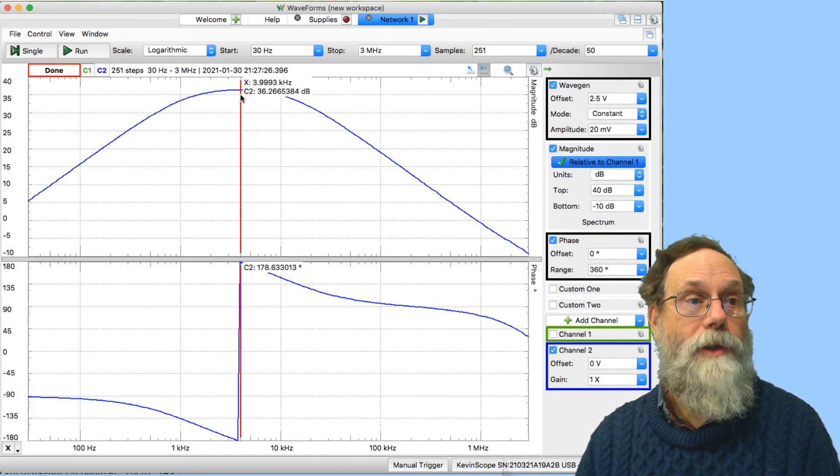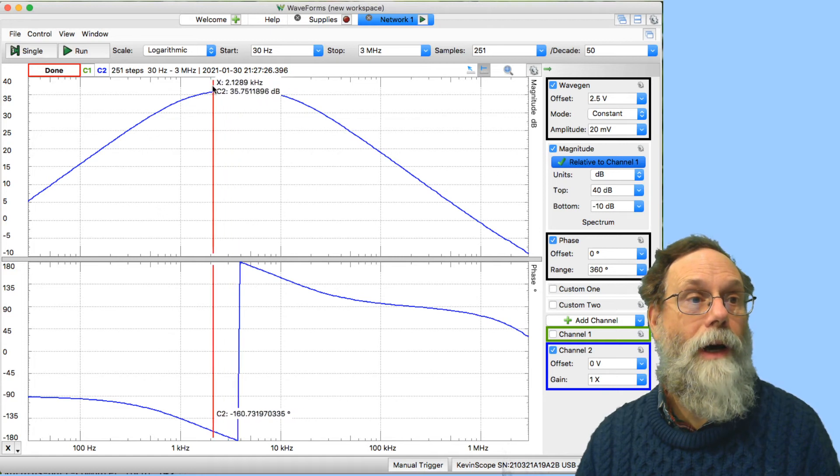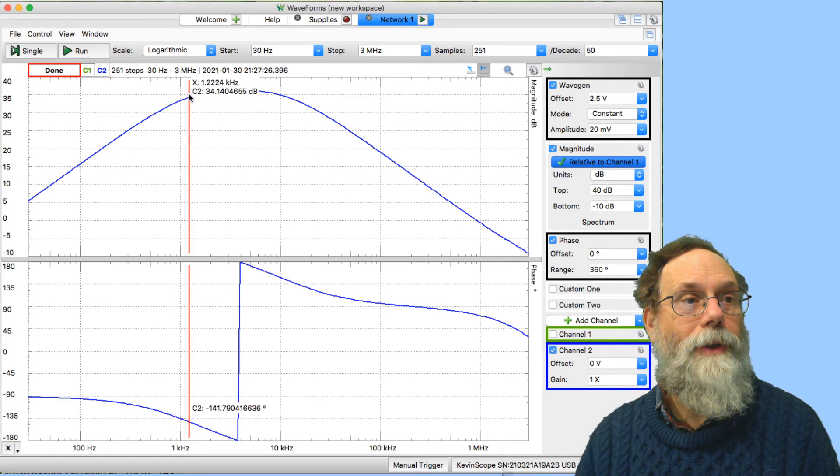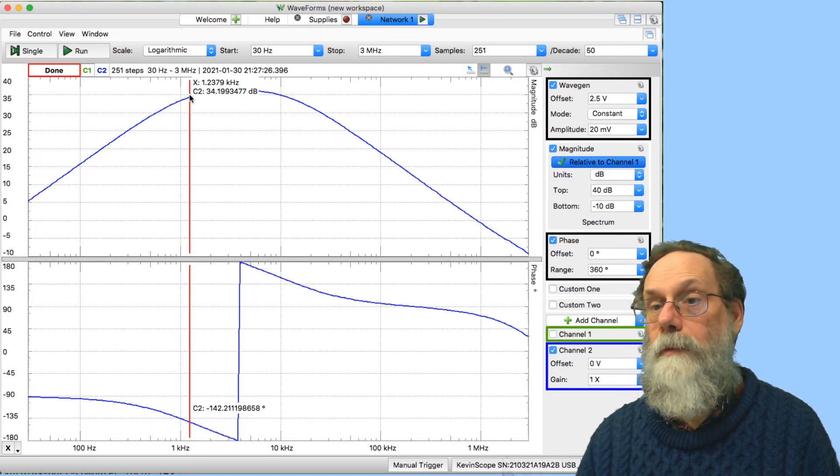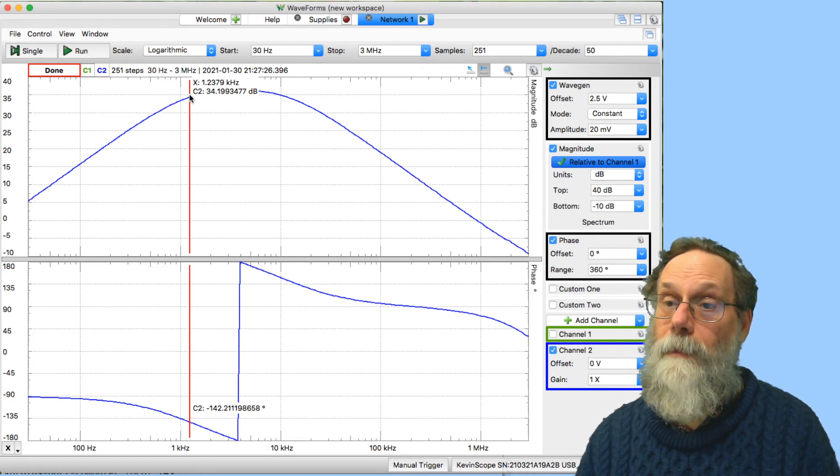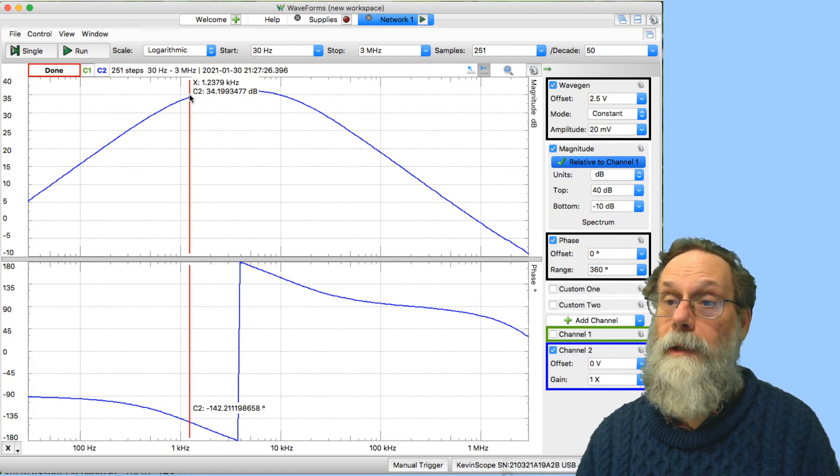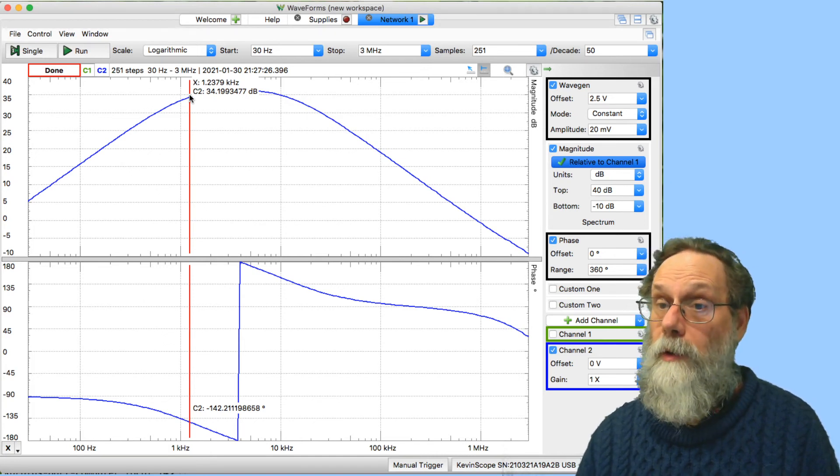We can take a look for where it's 3 dB down from that. It's about 1.24 kilohertz, and that's not too far off from where we expected the corner frequency to be. So our filter seems to be working correctly.